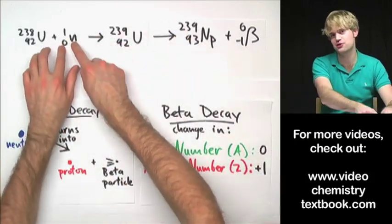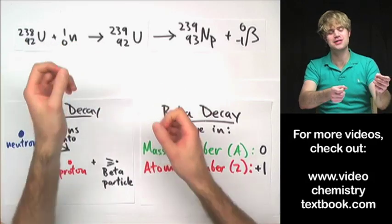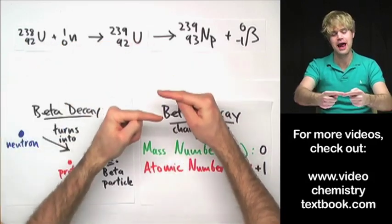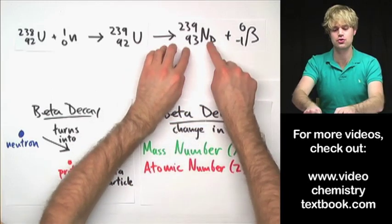We didn't have to add the proton. It's like all we had to do was add that neutron, it made this guy unhappy, and then it wanted to turn one of its neutrons into a proton.